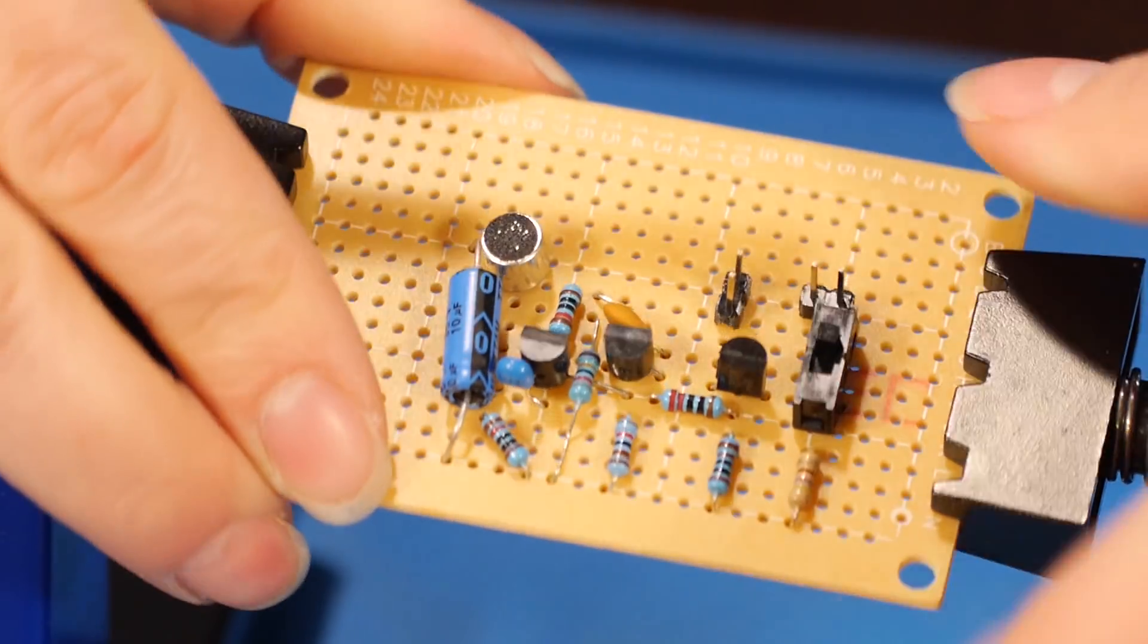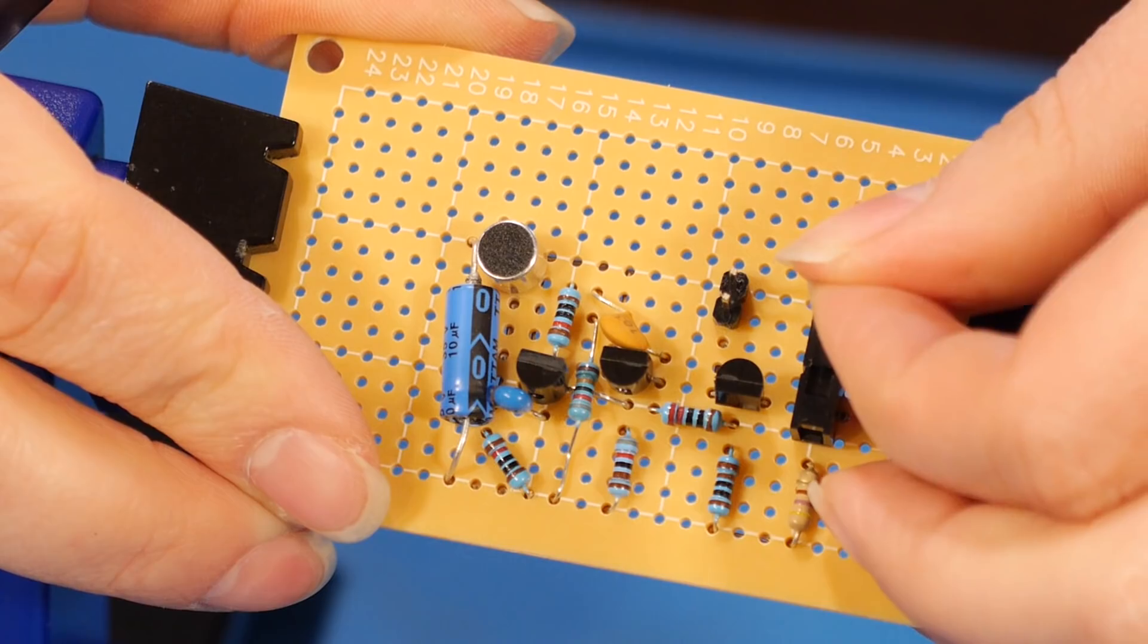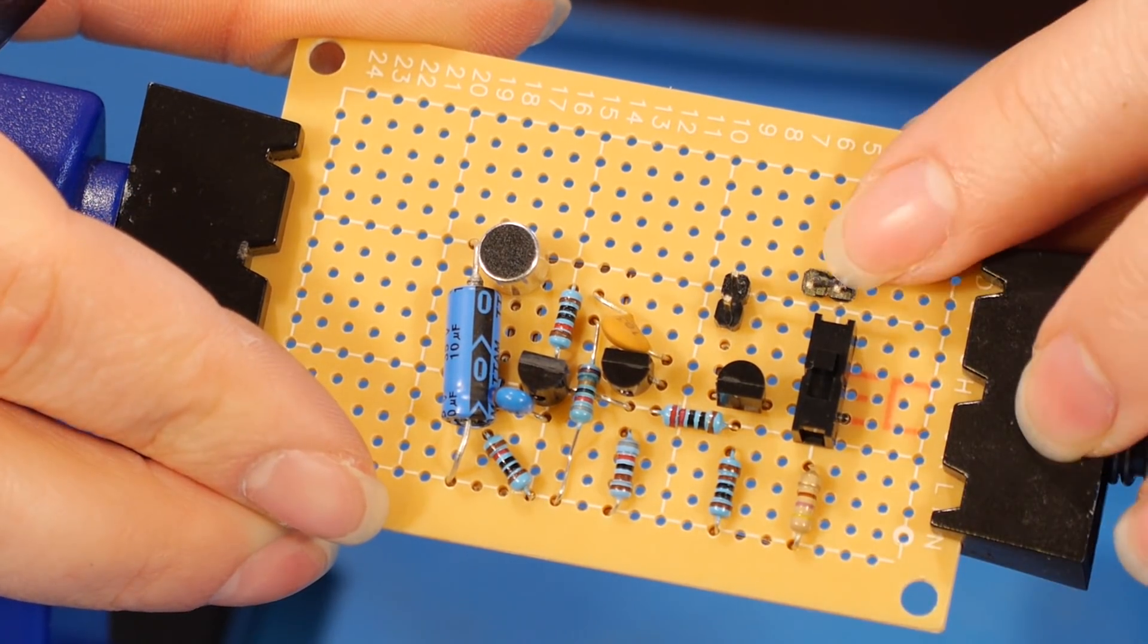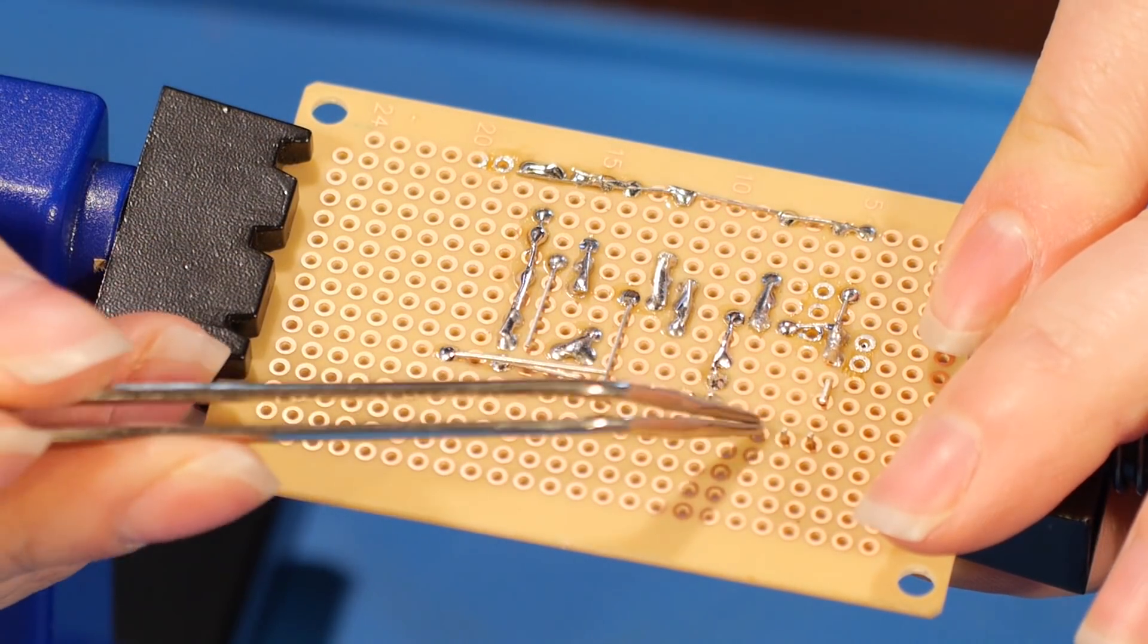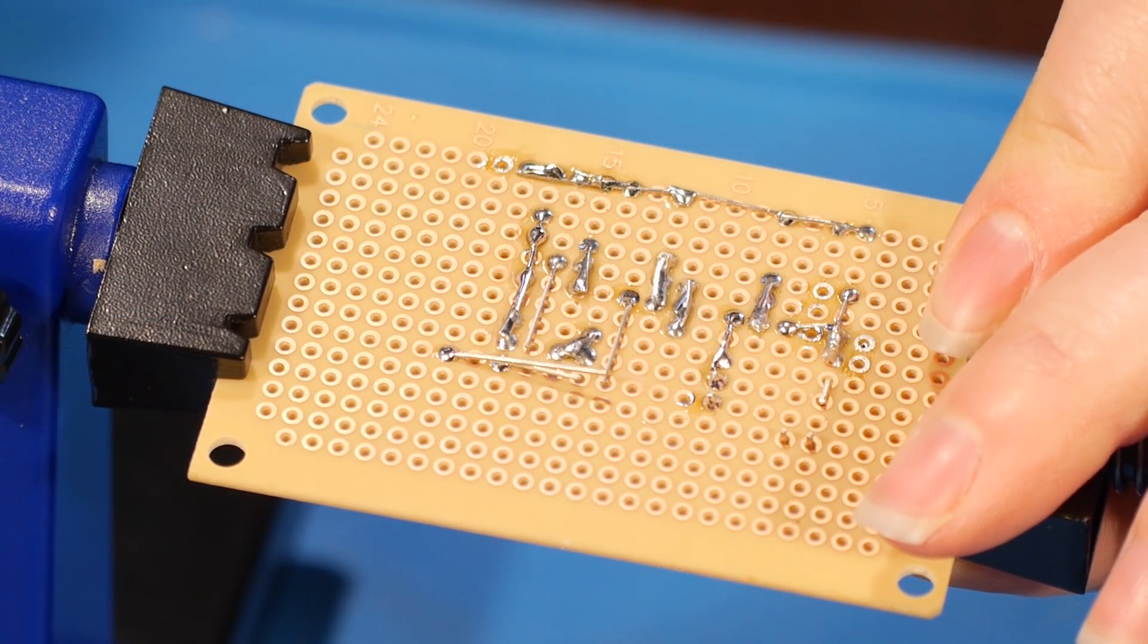But that doesn't really give me a lot of room to get my little fingers in here to plug and unplug my power. So I'm going to move it down one. So when I go to attach the ground plane, I'm going to have to jog over one row. But we can do that.